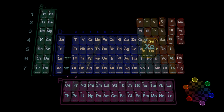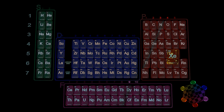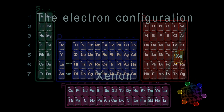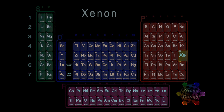In this video, we will finish out the fifth row in the Periodic Table with a configuration for Xenon. Xenon is a noble gas, so it will be in Group 18, the sixth and final column in the P block.